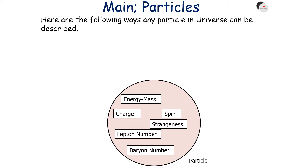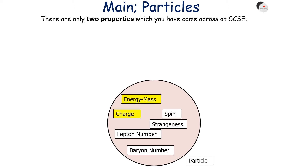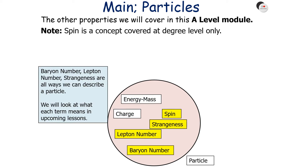Any particle in the universe can be described by its energy/mass, its charge, its spin, its strangeness, its lepton number, and its baryon number. There are only two properties you've come across at GCSE: the charge of a particle and the energy/mass of a particle. Baryon number, lepton number, and strangeness are all ways we can describe a particle, and we'll look at what each term means in upcoming lessons. Note that spin is a concept covered at degree level only.